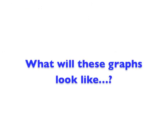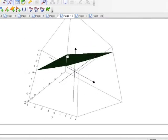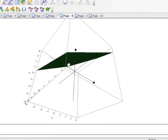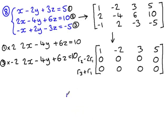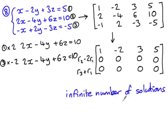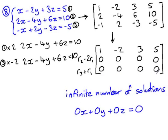Graphically, this just looks like one single plane because that's what it is. Our system of equations has an infinite number of solutions because every point on each plane is also a point on each of the other two planes — they're the same plane. Looking at the row echelon form of the matrix, what this looks like is a row of zeros, meaning zero x plus zero y plus zero z equals zero. The reason it has an infinite number of solutions is because you can pick any value you like for x, y, or z and this equation will always hold true.